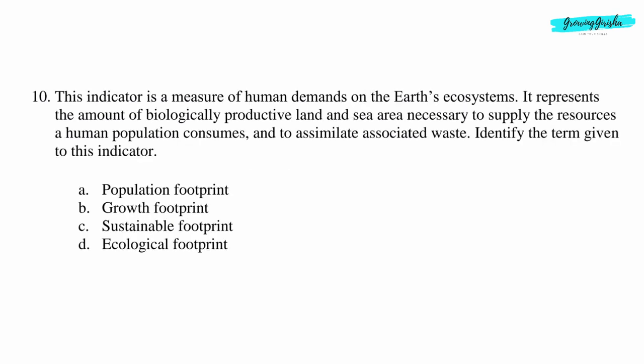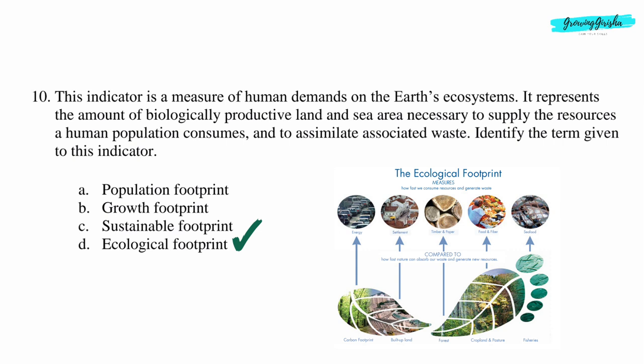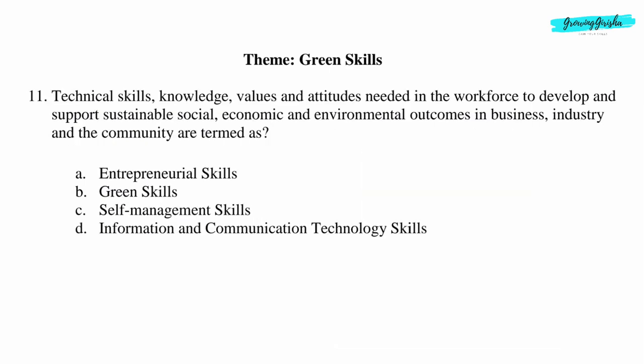Question 10: This indicator is a measure of human demands on the earth's ecosystems. It represents the amount of biologically productive land and sea area necessary to supply the resources a human population consumes and to assimilate associated waste. Identify the term. Option D: Ecological Footprint.